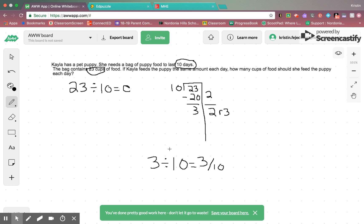Then, Kayla would actually feed her dog every day, or I should say puppy, 2 whole cups of food, and then the leftover, we could split with 10 days, and it would turn into three-tenths. So, our answer is two and three-tenths a cup of puppy food.